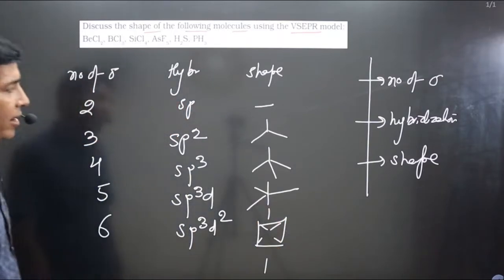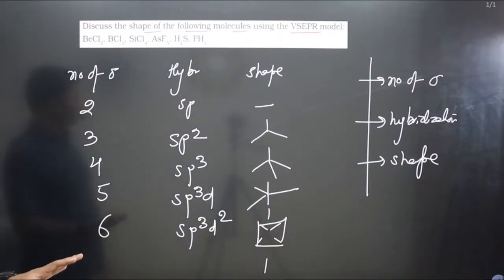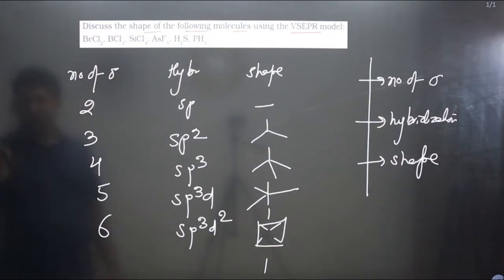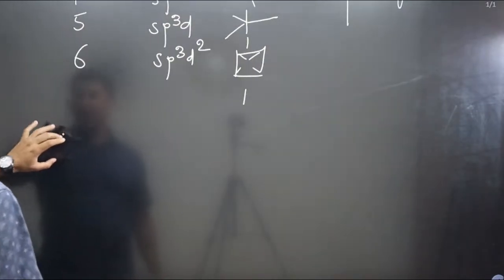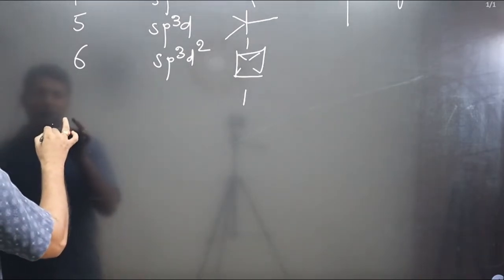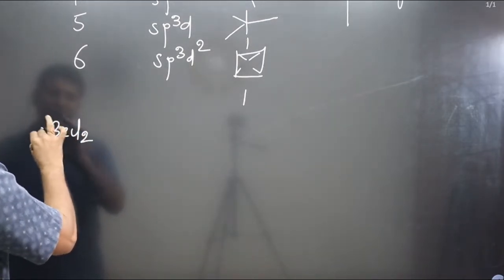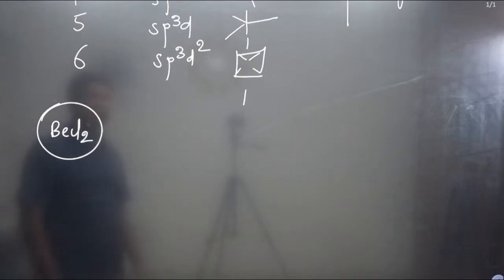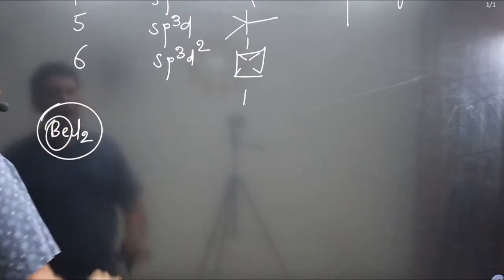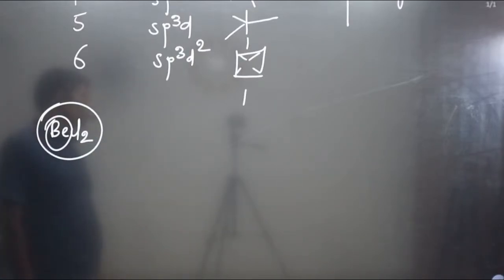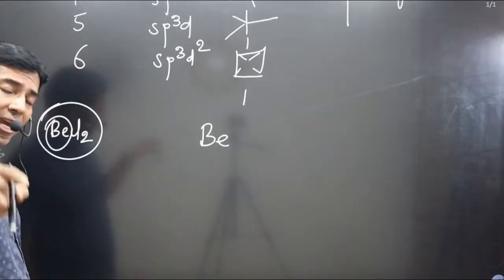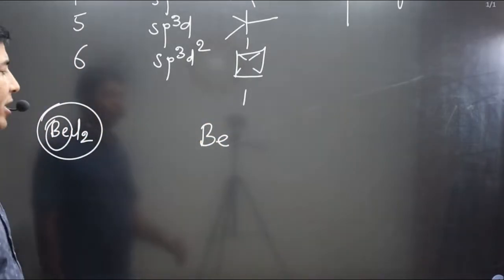Using this information we can answer the question. The first molecule is beryllium chloride, BeCl₂. First of all we have to determine the number of sigma bonds. Beryllium is the central element. Beryllium is present in the second group, so it has two valence electrons.